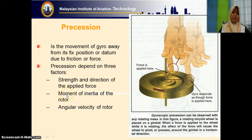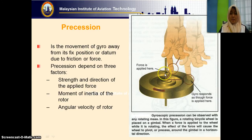The second factor is the moment of inertia of the rotor — normally, the higher the moment of inertia of the rotor, the lower the precession. And also the angular velocity: the higher the angular velocity — the rotational speed — the lower the precession.